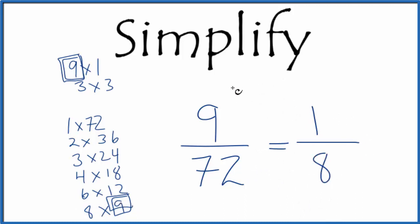So when we simplify the fraction 9 over 72, the simplest form is 1 over 8. We can't reduce this any further. If you divide 9 by 72, you'll get the same answer as if you divide 1 by 8. They're equivalent fractions.